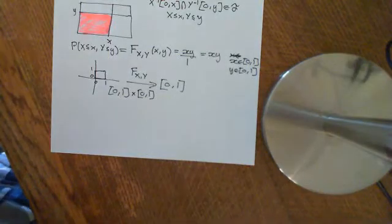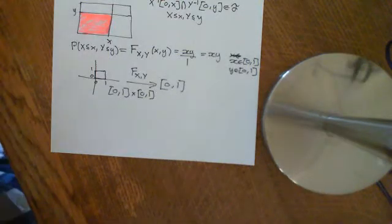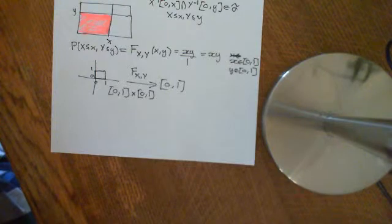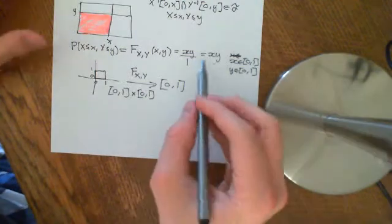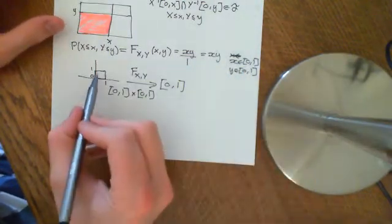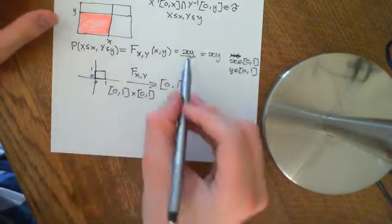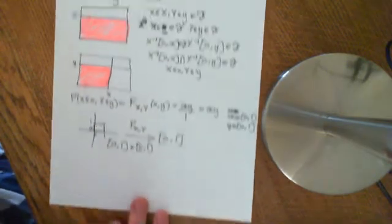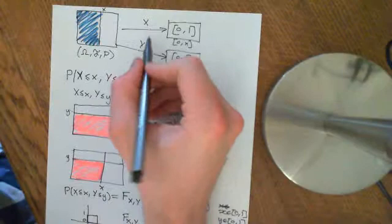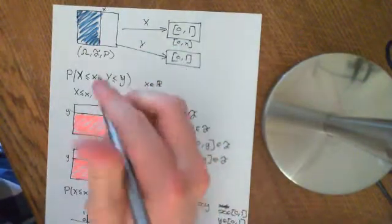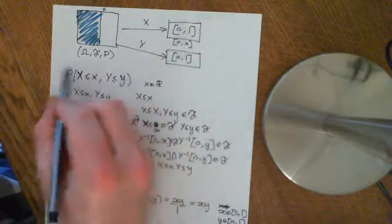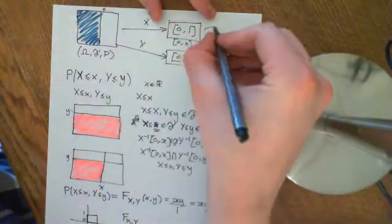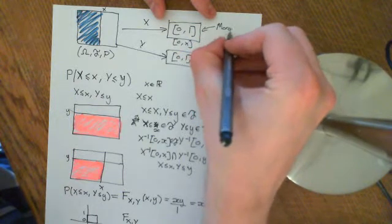Welcome back. Remember from a previous video that we are looking at the probability space you get if your experiment is picking a point at random from a square. We discussed that the CDF function, at least on this portion of R2, is given by x times y. The two random variables that built the joint distribution are called the marginal distributions.